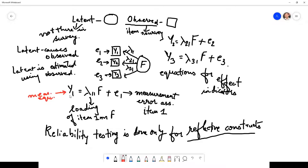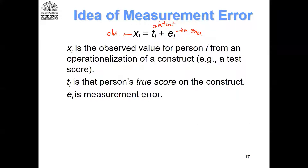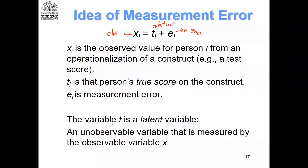You have the observed item X which equals loading times the latent factor plus E. X is the true observed value for person i from an operationalization of a construct — basically you get it from an item. T is the person's true score on the construct, E is the measurement error, and T is the latent variable — an unobservable variable that is measured by the observed item.